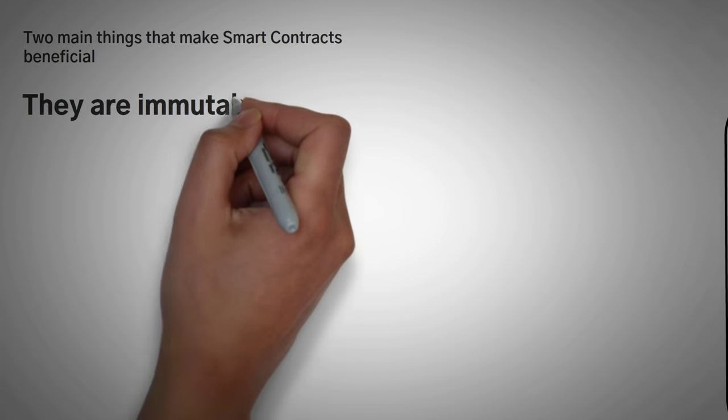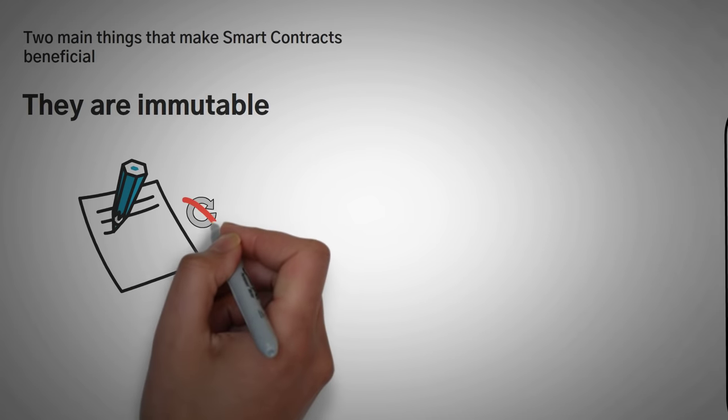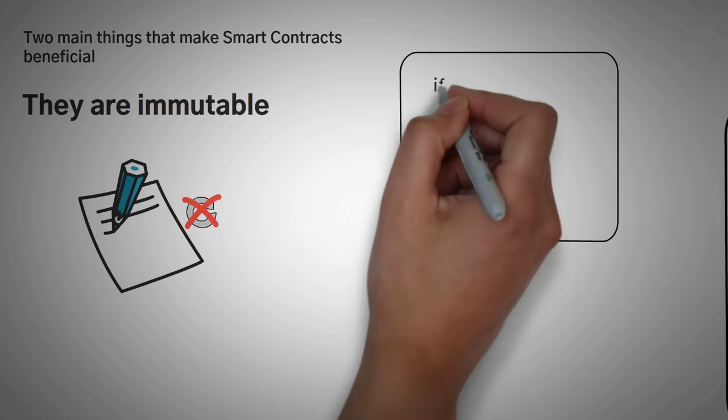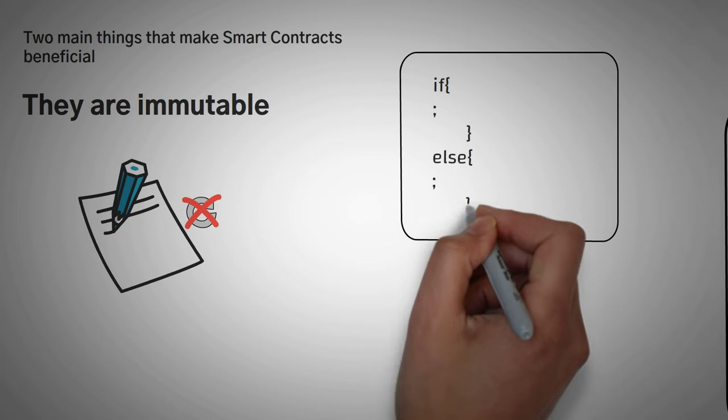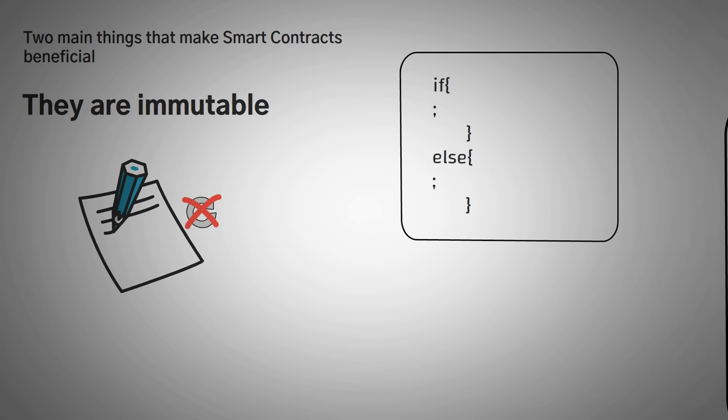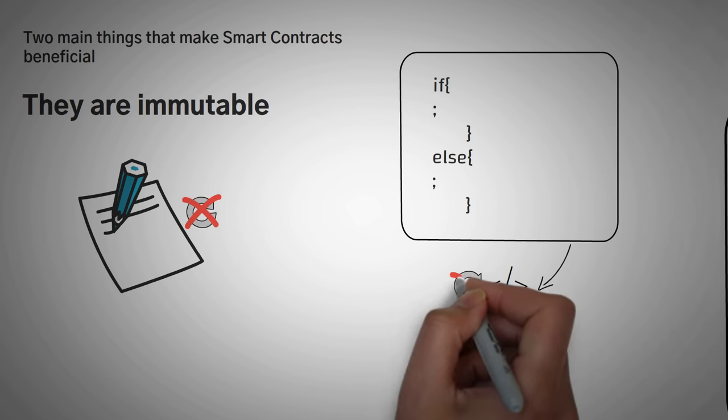Number one, they are immutable. This means they cannot change. So you remember how I said some people call them, if this, then that? It's because most smart contracts do something when they get triggered. They are basically just code on the blockchain that gets ran. And once it's on the blockchain, it can never be changed.